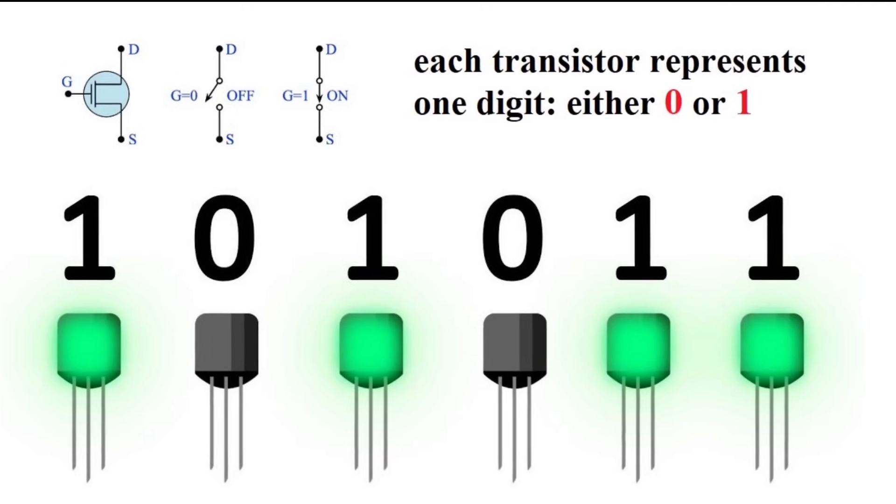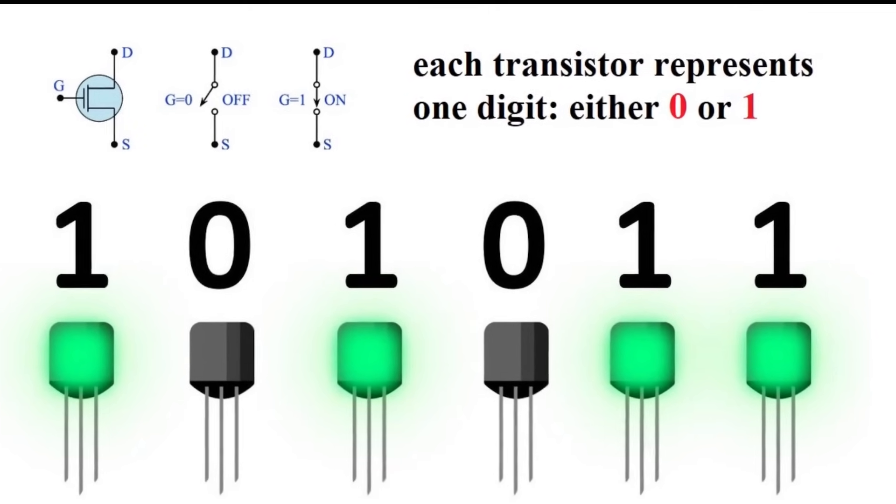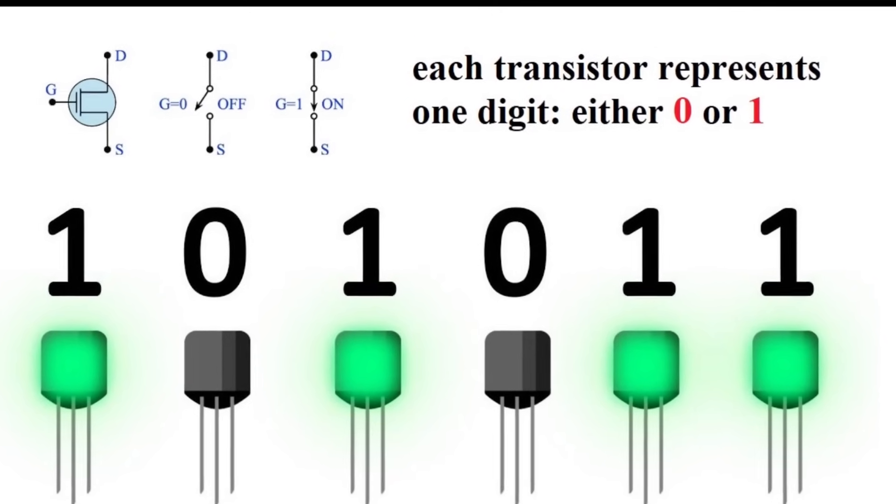In simple language, a transistor can have two states. It is either off or on, which corresponds to 0 and 1 in the computer language.